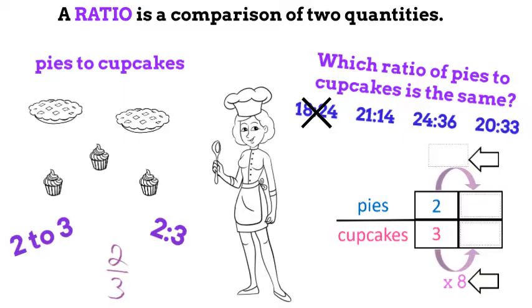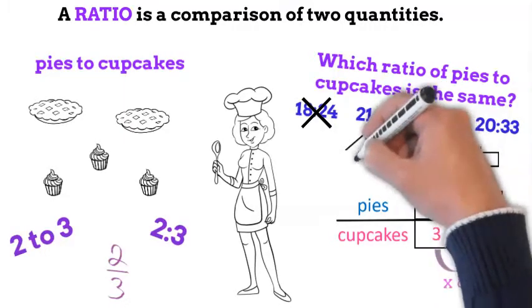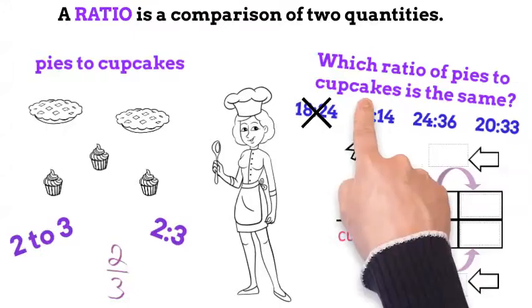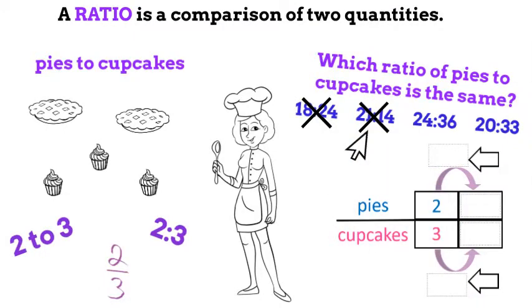The ratio 21 to 14 has the greater number first. However, our ratio has the greater number second. So this is not the correct answer either.